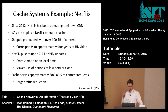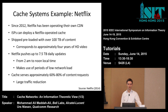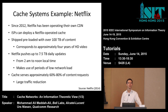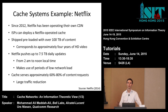This update window corresponds exactly to the dip in the demand curve — the time when the network is underutilized. Netflix says that this cache serves approximately 60% to 80% of content requests, resulting in a large traffic reduction for the ISP.